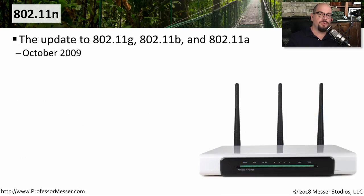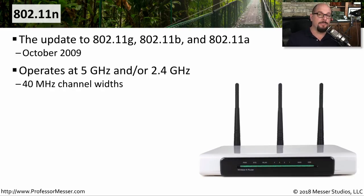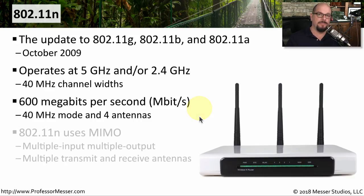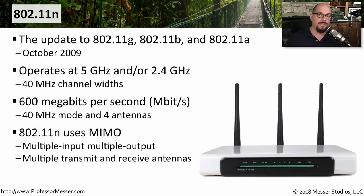In October of 2009, we received a big update to the 802.11 standard: 802.11n. This was effectively an update for 802.11g, 802.11b, and 802.11a. 802.11n can operate at 5 gigahertz or 2.4 gigahertz, with channel widths of 40 megahertz — much larger than previous versions. 802.11n can support throughputs up to 600 megabits per second using that 40 megahertz channel width and four antennas sending multiple streams simultaneously. 802.11n was the first version to use multiple input, multiple output — or MIMO — where you send multiple streams of information over the same frequency using multiple antennas and radios.